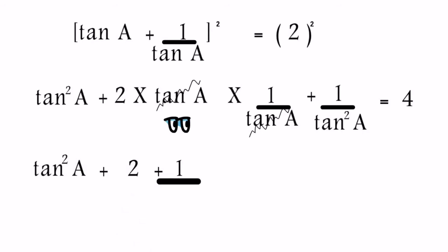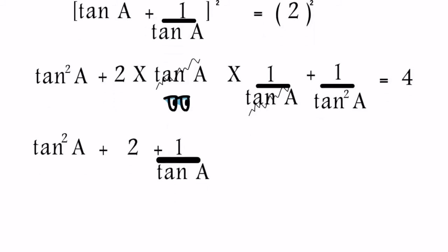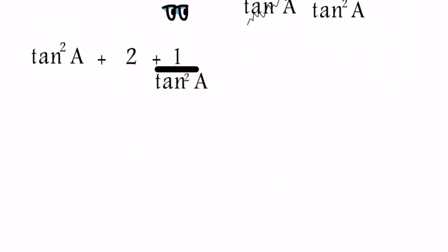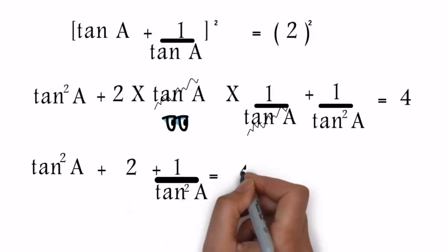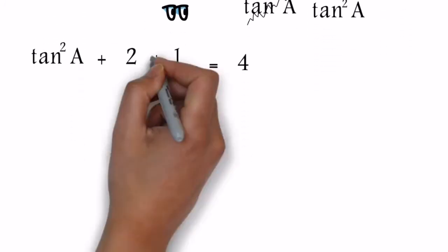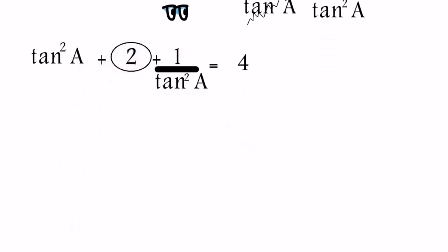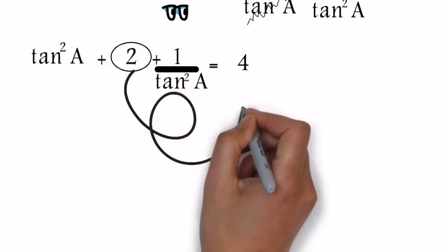Here the sum itself will give us the further push to understand what to do. The way we normally do, 2 - that is the term without any trigonometric ratio - will be shifted to the 4 and that will send it in negative.